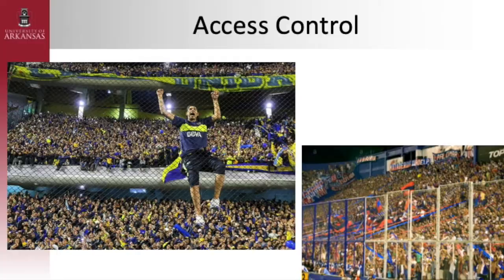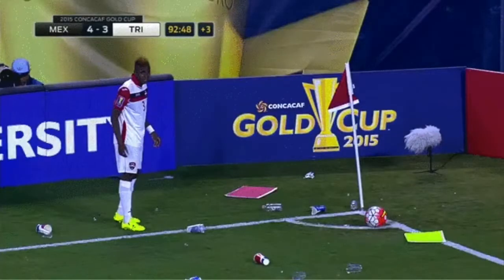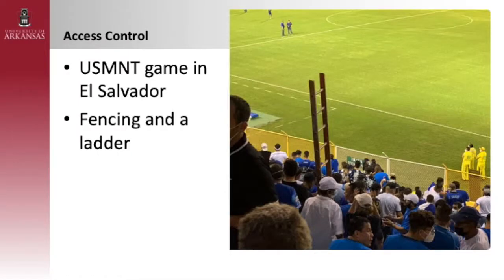Let me show you an example of what can happen. This was at a pretty high-level competition — Mexico versus Trinidad in 2015. This player is taking a corner kick and all of this stuff was thrown at him. Just a few days ago in the US men's national team game against El Salvador, they added fencing to help prevent that type of thing from happening.